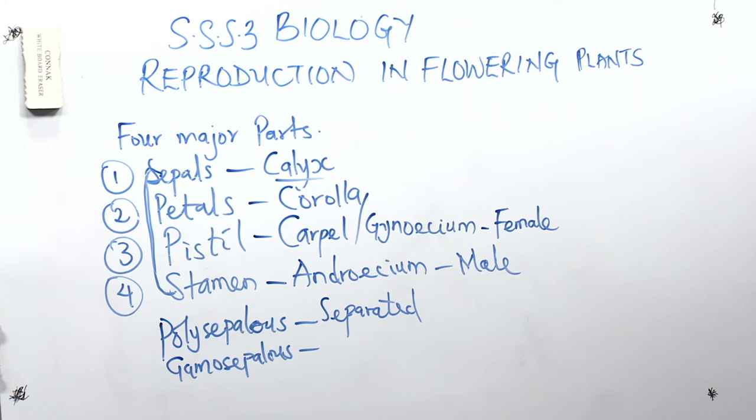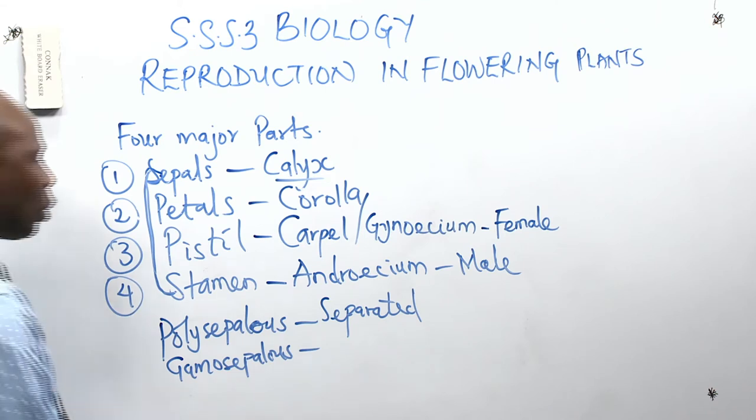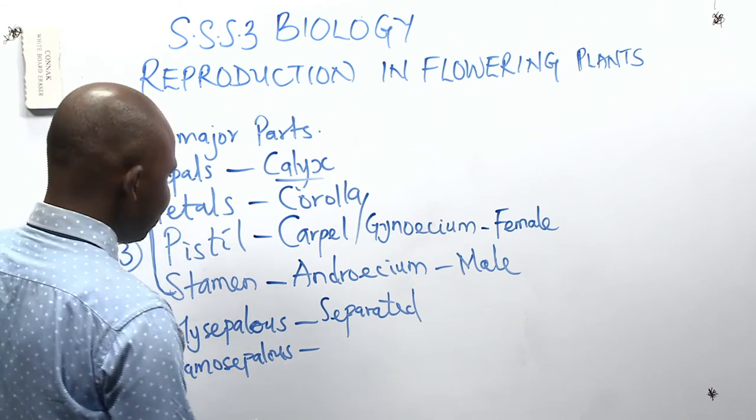Gamosepalous is the opposite of polysepalous, meaning the flower consists of sepals that are fused or joined together, forming something like a cup. Polysepalous means separate sepals; gamosepalous means fused or joined sepals.